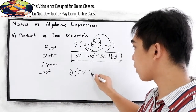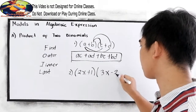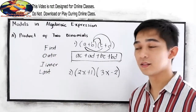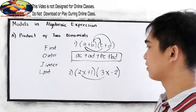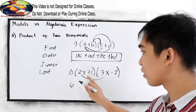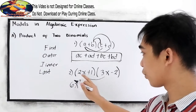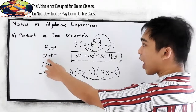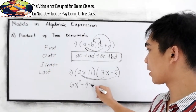Next example: (2x + 1) times (3x − 2). Using the FOIL method — the First terms: 2x times 3x gives us 6x². The Outer terms: 2x times negative 2 gives us negative 4x.